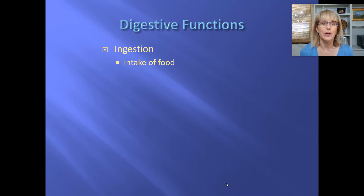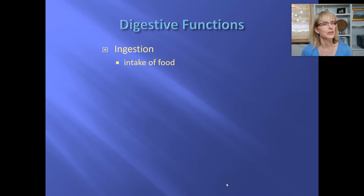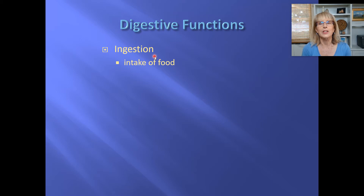Let's just talk about, in general, the four different things that your digestive system is responsible for. Ultimately, this is how the body is going to get the biomolecules that allow us to run all of our mitochondria so that the cells can stay alive. But it starts off with ingestion — taking a bite of food and making it so that that bite of food can be swallowed.